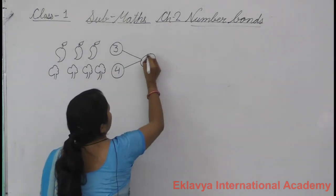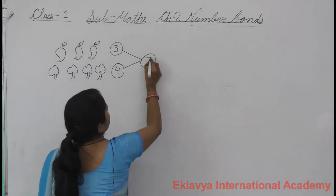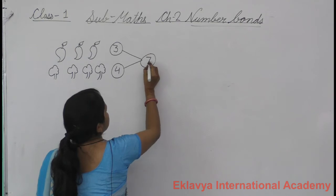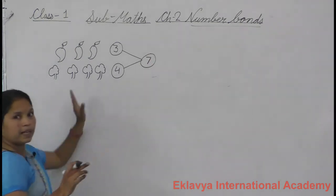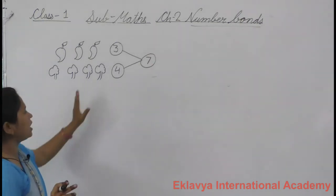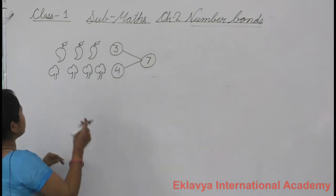So your number bond answer is seven. Seven. Now watch the next one.